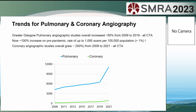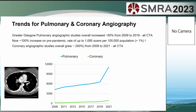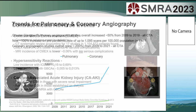Looking at our local use of imaging over the years in Glasgow, CT pulmonary angiography has increased exponentially in the last decade, particularly during the COVID pandemic. We now image approximately 1% of our adult population per year with CT pulmonary angiography. Coronary CT is also increasing significantly.